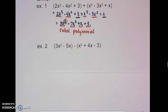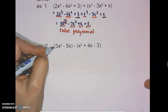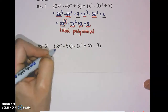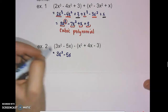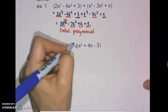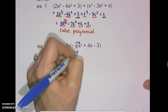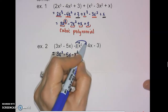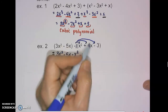Next we have the quantity 3x squared minus 5x, minus the quantity x squared plus 4x minus 3. We're subtracting between these. The first parenthesis has a positive 1 in front, so nothing changes there. The second parenthesis has a negative 1 in front, which means we distribute: negative 1 times x squared is negative x squared, negative 1 times positive 4x is negative 4x, and negative 1 times negative 3 is positive 3.